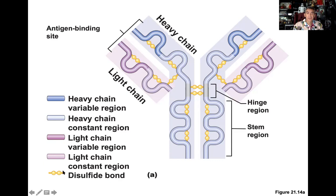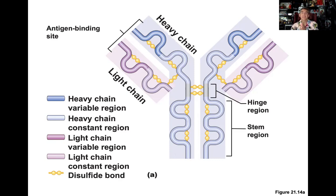All of these chains are held together by covalent bonds — specifically disulfide bridges — forming this generic Y-shaped pattern with a constant and then a variable component. That's the molecular structure of these antibodies. They are actual protein molecules.